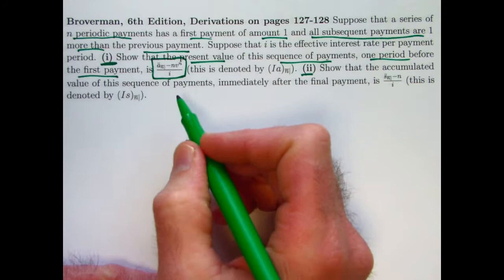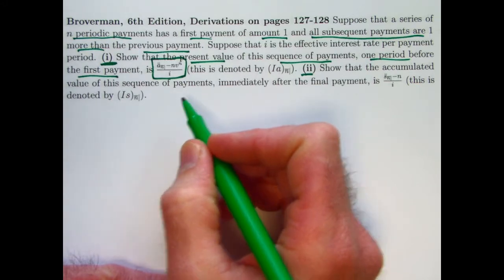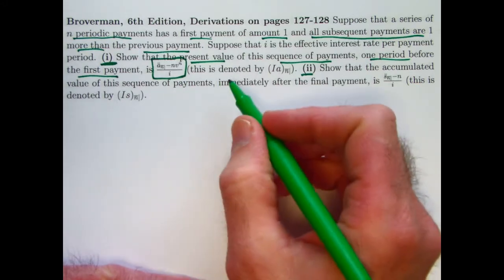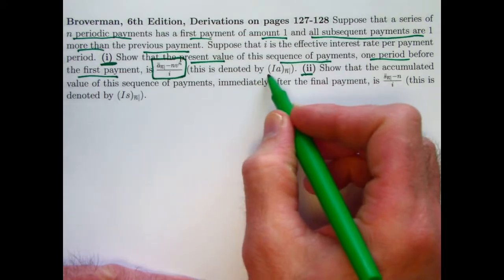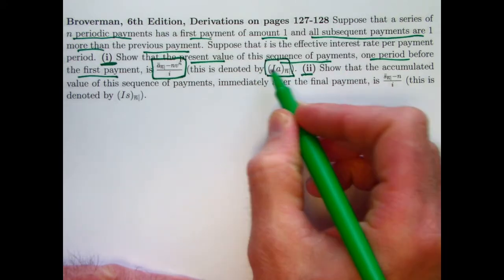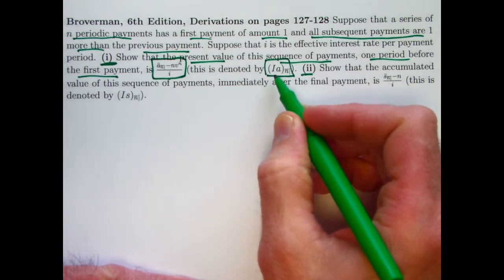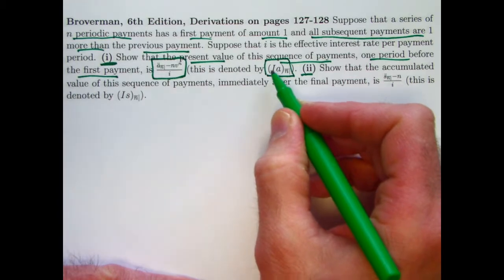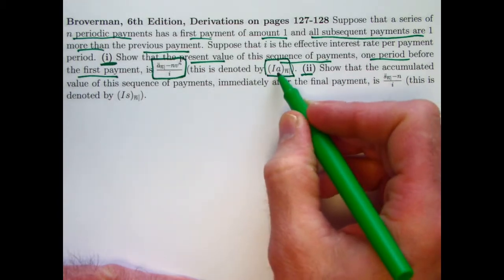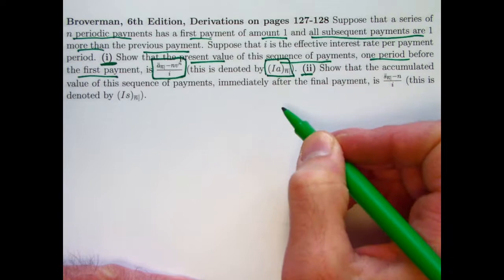n is again the number of payments, v is 1 over 1 plus i, the present value discount factor. This quantity does have a special symbol. It's denoted by (Ia)_n, i standing for increasing, it's an increasing annuity, a standing for present value, n standing for n payments.